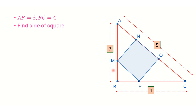Hello friends. In this problem, a triangle ABC is given. The side lengths are AB = 3 units and BC = 4 units. There is a square NMPO inside this triangle, and we have to find the side length of this square.